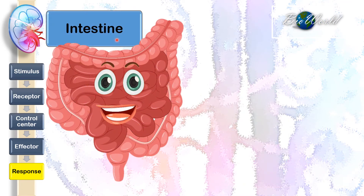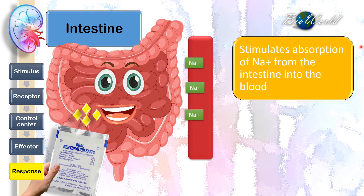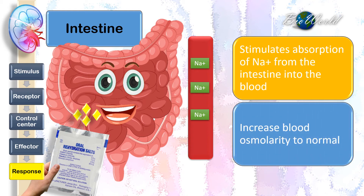Now I'll talk about the response of the intestines towards angiotensin 2. At the beginning of the video, I introduced the oral rehydration salts. When we consume these salts, our intestines will contain sodium ions. Usually, the sodium ion will be excreted along with the feces. But now, since our blood requires the sodium ion, angiotensin 2 will stimulate the absorption of sodium ions from the intestines into the blood. This way, the blood's osmolarity can be increased to normal.